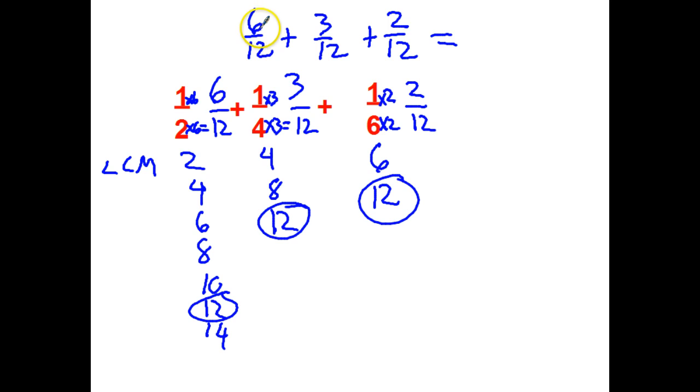So my new problem is six twelfths plus three twelfths plus two twelfths. And to do this, I just add all of my numerators. Six plus three is nine, plus two more is eleven. And the denominator was twelve all the way across. That's what it's staying, eleven twelfths. And I don't need to simplify anything there.